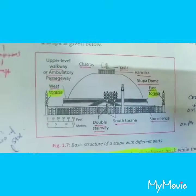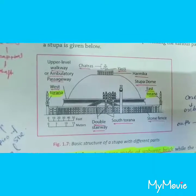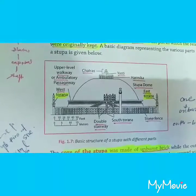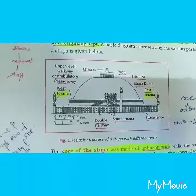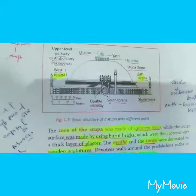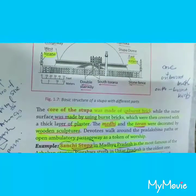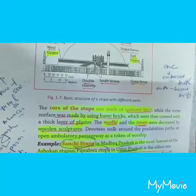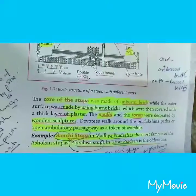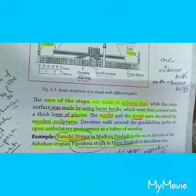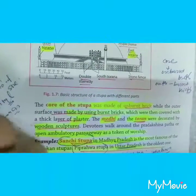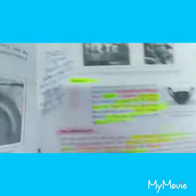The parts of a stupa include stone railings, the south Torana, a double stairway, the east Torana, the west Torana, the Yashti, the Harmika, Chatras, and ambulatory passageways. The core of the stupa was made of unburned brick, while the outer surface was made using burned brick. The Sanchi Stupa in Madhya Pradesh is the most famous of Ashoka's stupas, and the Piprahwa Stupa in Uttar Pradesh is the oldest one.